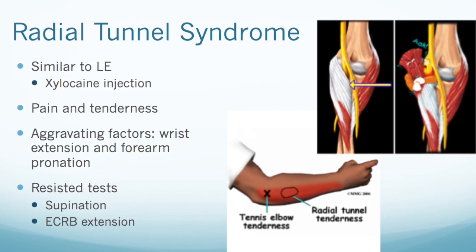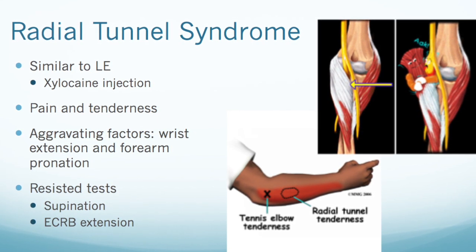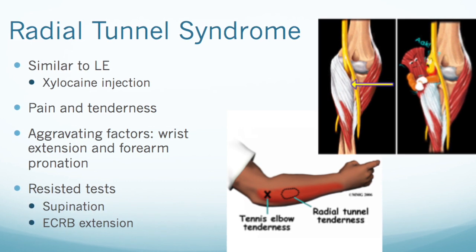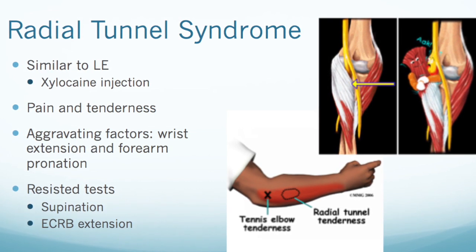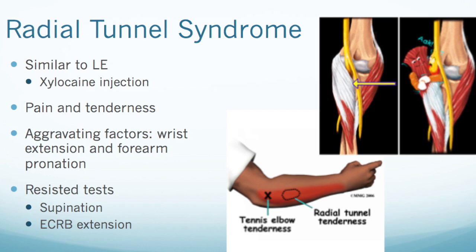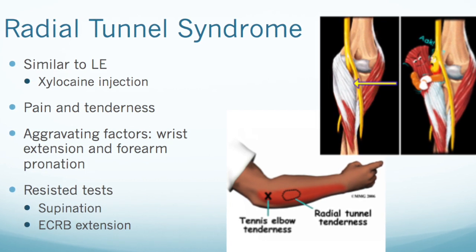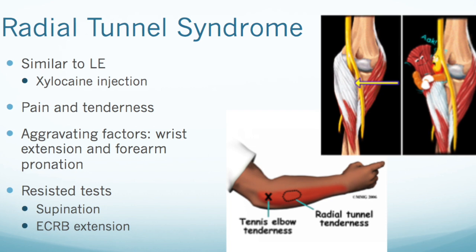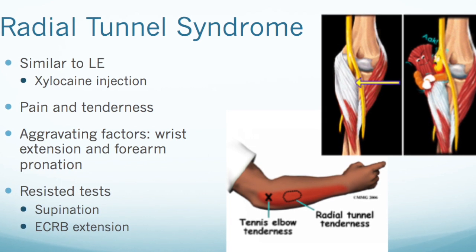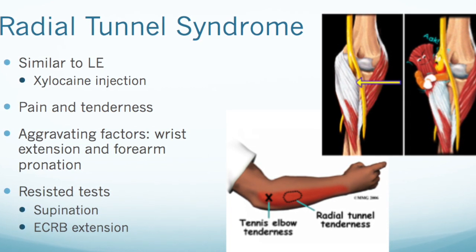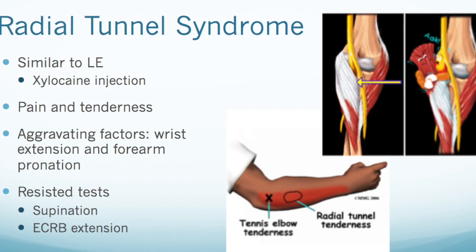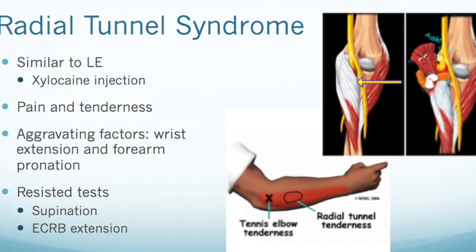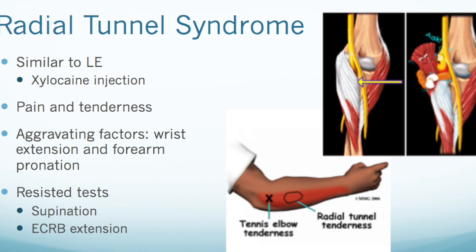A way to differentiate between the two is to use a xylocaine injection, which is a mixture of lidocaine and cortisone. If the symptoms are relieved with the injection, it is indicative of lateral epicondylalgia, but if the symptoms persist, it is indicative of radial tunnel syndrome. Some aggravating factors for these patients would be wrist extension and forearm pronation. A good resisted test to do would be supination or extensor carpi radialis brevis extension.